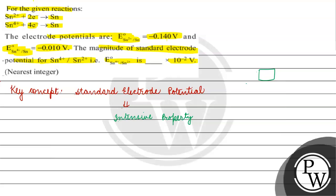For example, if substance A has a temperature of 25°C and another substance has a temperature of 35°C, if we combine them the temperature will not be 60°C. That doesn't happen, because temperature is also an intensive property. Similarly, standard electrode potential is an intensive property — it doesn't depend on the size of matter, so we can't directly add or subtract it.